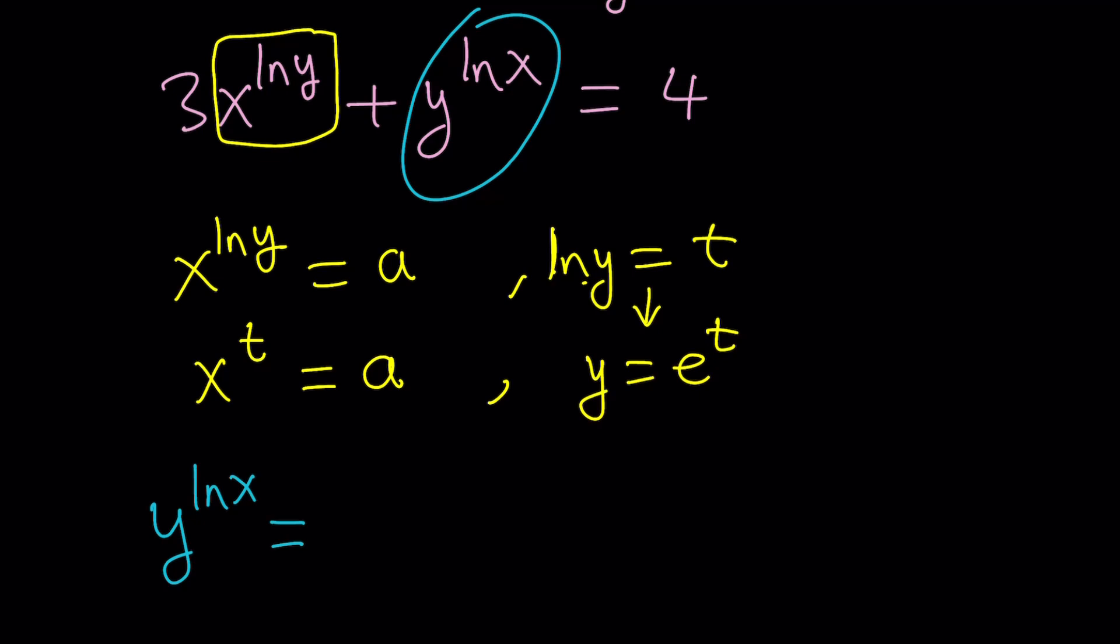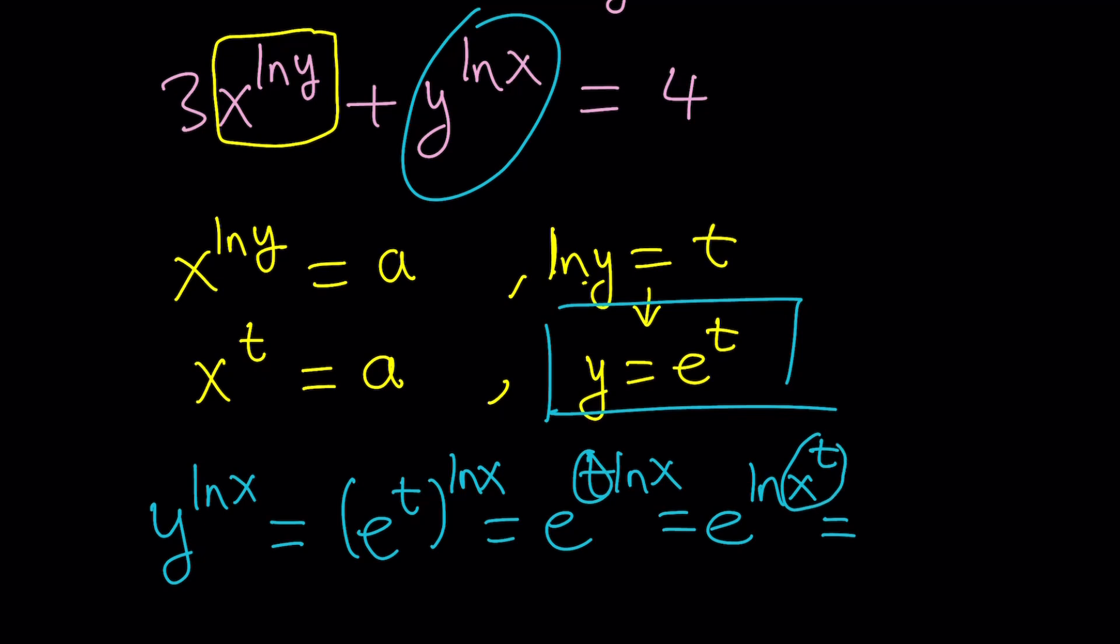First of all, since y is equal to e to the power t, I'm going to replace y with e to the power t. And then I'm going to multiply the exponents. And then this t can become a power. So I can write it as e to the power ln x to the power t, which is basically x to the t, right? And then that becomes a. Make sense? Because e to the power ln something is that thing. So we can set it equal to x to the t, which is equal to a.